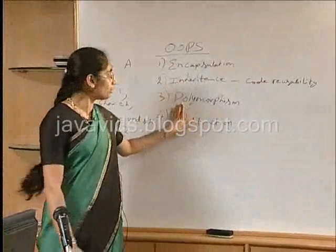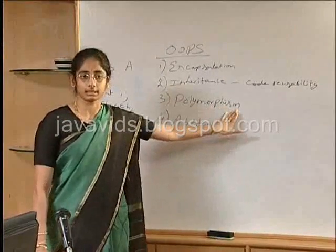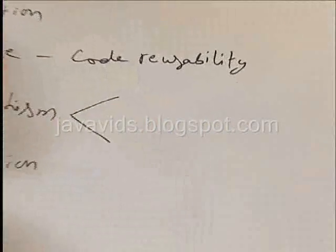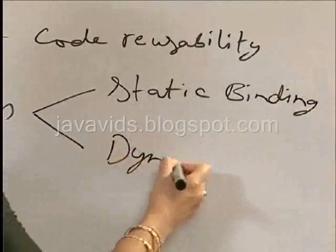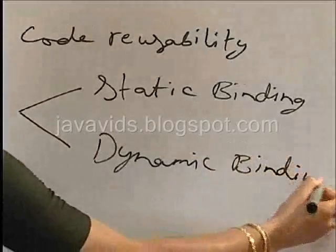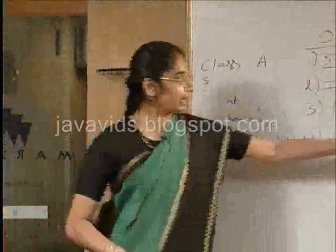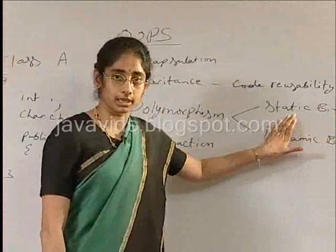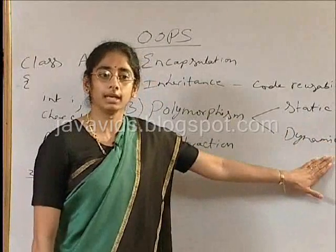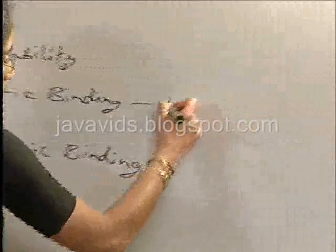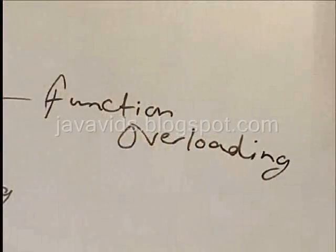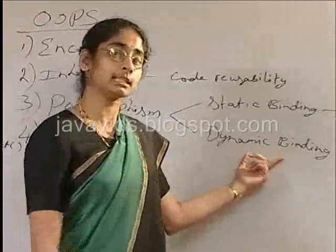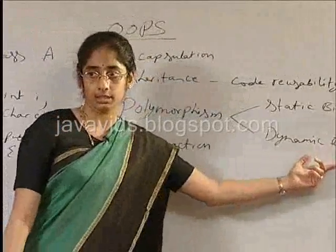Next, polymorphism. Polymorphism means many forms. There are two types of polymorphism: static binding and dynamic binding. Static binding is so called because it is checked at compilation time, whereas dynamic binding — the checking is done at runtime. An example of static binding is function overloading. Dynamic binding is when a particular object acts differently depending on the type of reference that is passed to it. We will talk about this a little later.